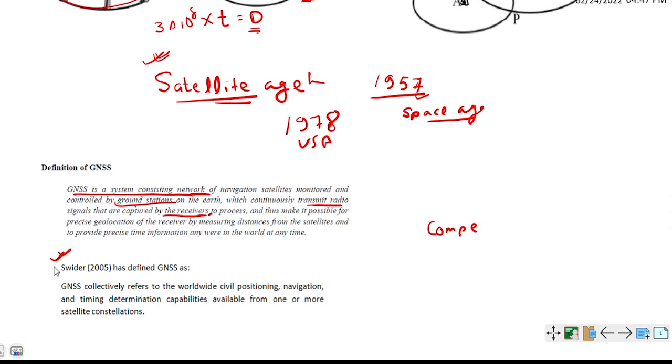Another important definition is given by Swider in 2005, that GNSS collectively refers to the worldwide civil positioning, navigation, and timing determination. You have to remember these three words: positioning, navigation, and timing, that is called PNT system. And one question came in GATE 2020 from this positioning navigation and timing. That was a direct question and you can get easily one mark in that question.